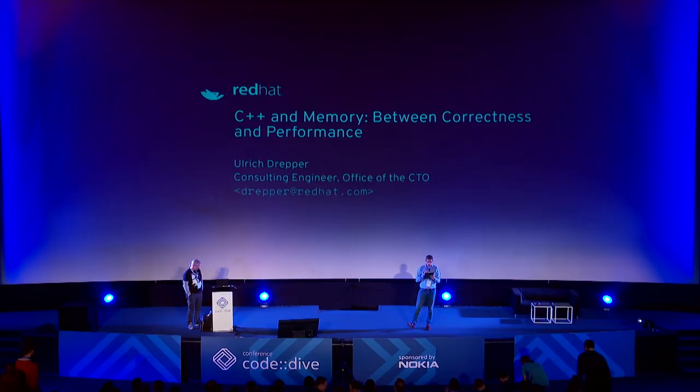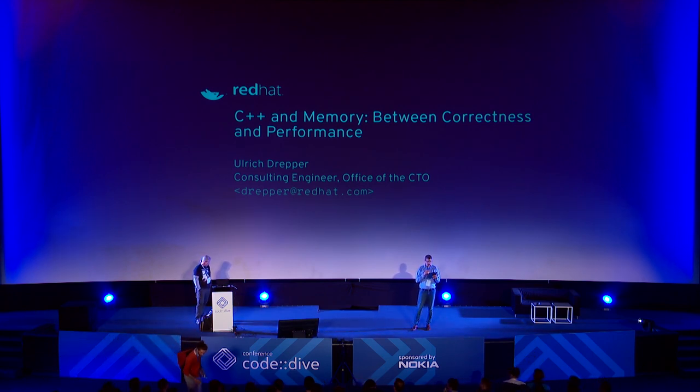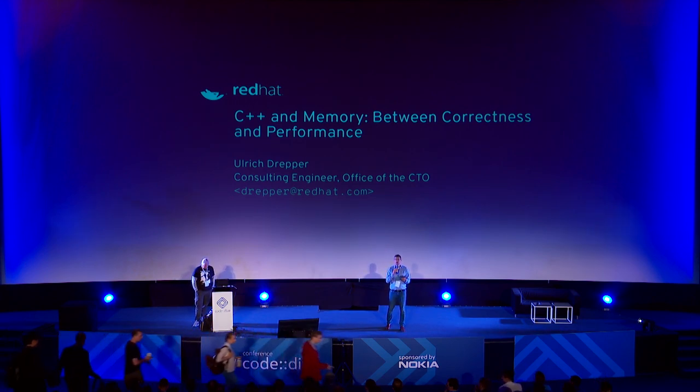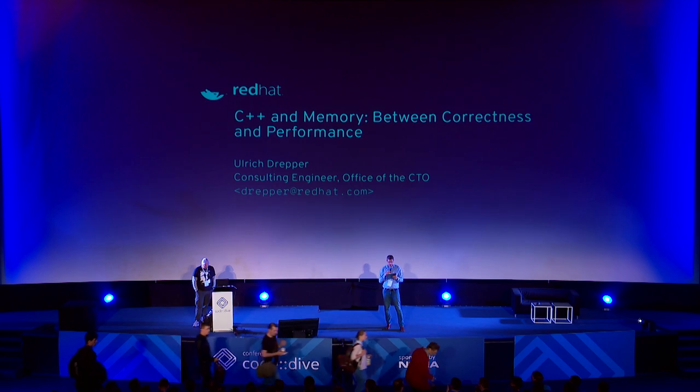Previously, Ulrich worked at Goldman Sachs in the Technology Division Data Science Research. His main interests are in the areas of low-level technologies like machine and processor architectures, programming languages, compilers, high-performance and low-latency computing. He also worked on several revisions of the POSIX standard and was an invited expert for both the C and C++ standard committees. His talk is called 'C++ and Memory Between Correctness and Performance.' Let's warmly welcome on stage Ulrich Drepper.